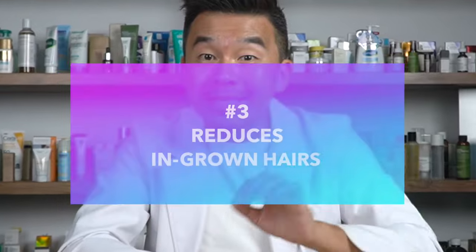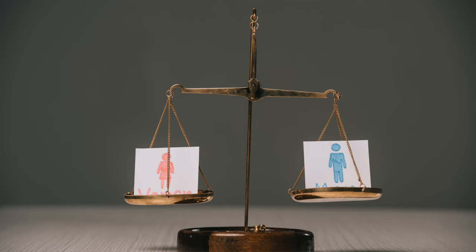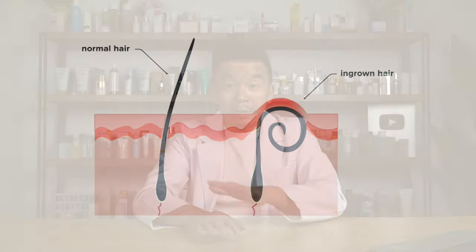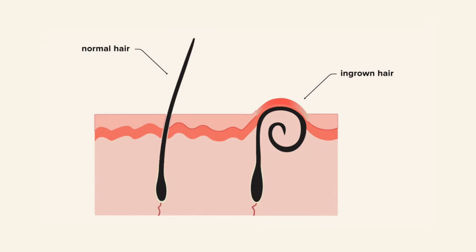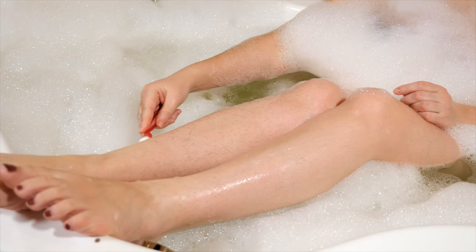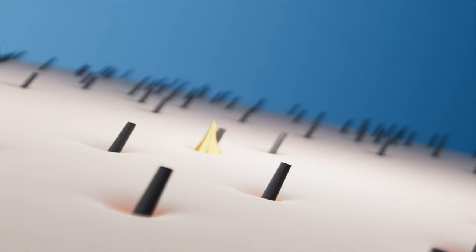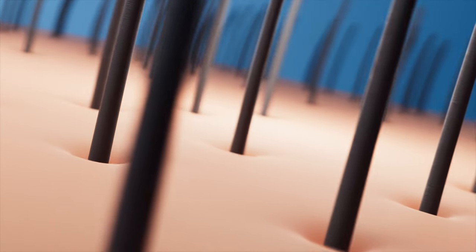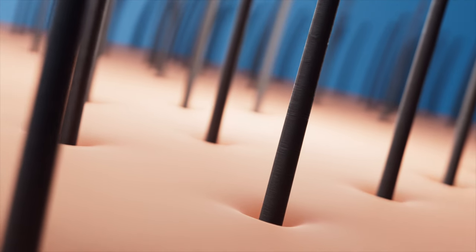Hack number three: reduces ingrown hairs. Ingrown hairs can happen to anyone — male or female — and often lead to uneven skin texture and inflammation of the hair follicles, called folliculitis. If you shave often, you're more prone to ingrown hairs. Applying the glycolic toner over areas prone to ingrown hairs weakens the bond between cells, making it easier for the growing hair to push out of the follicle. It also prevents the build-up of dead skin cells in the follicles. Use it once or twice a week, then cut down to once a week or once a month.